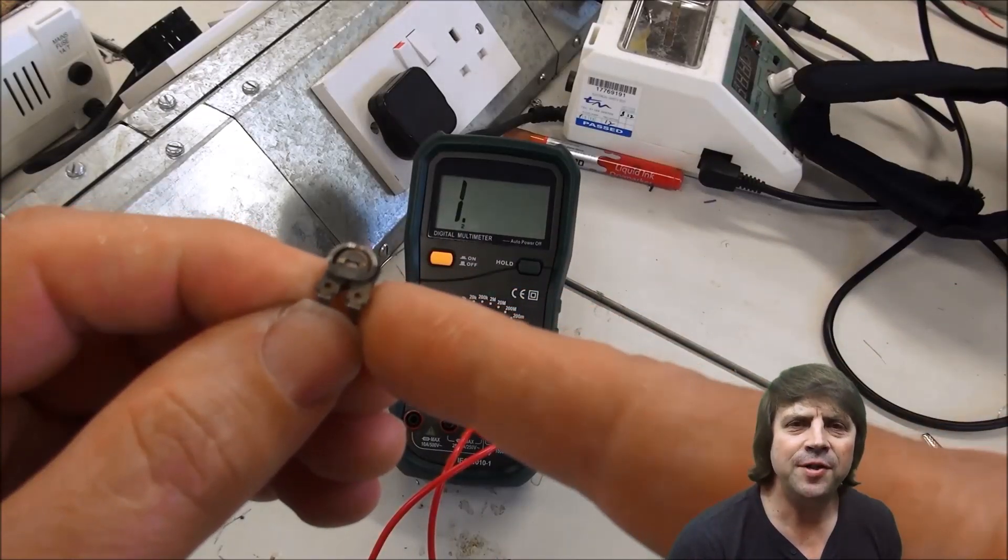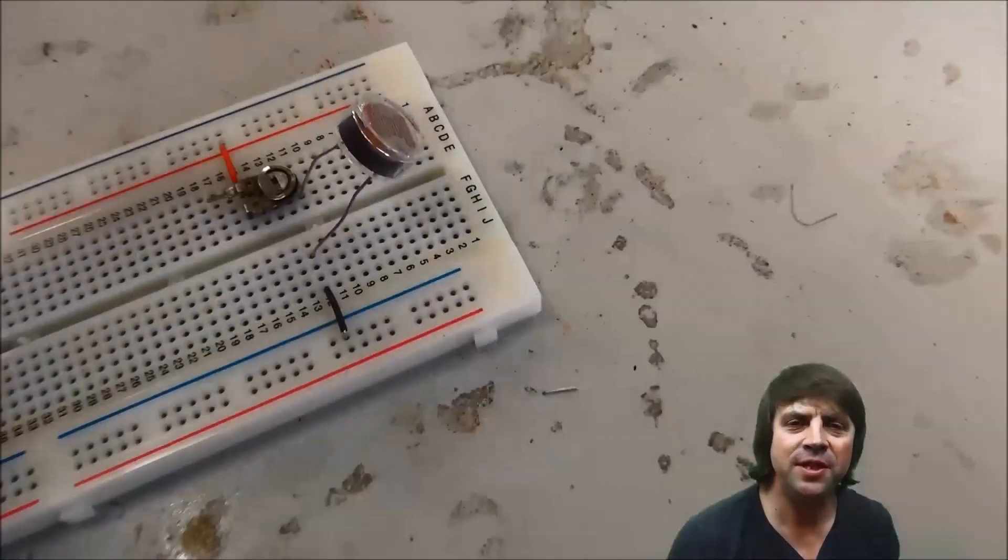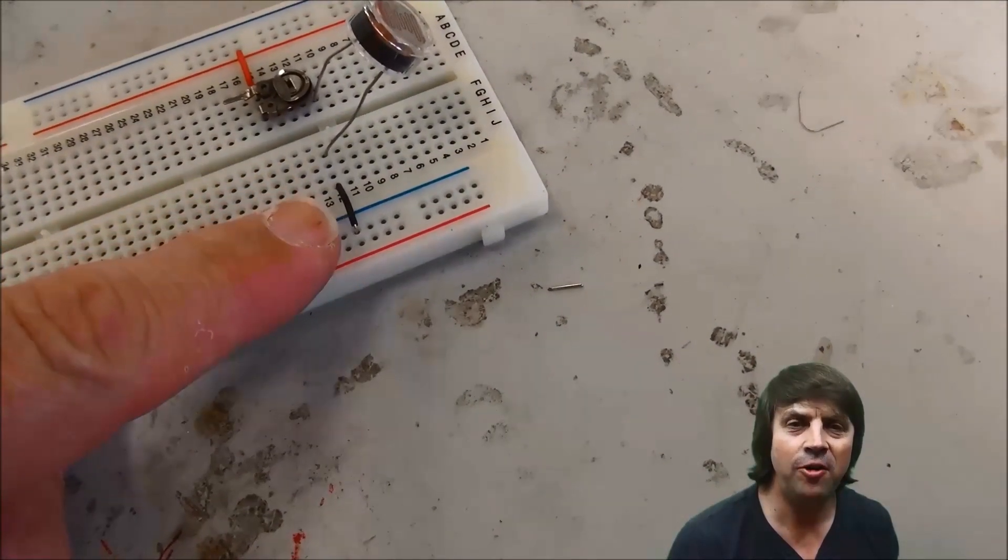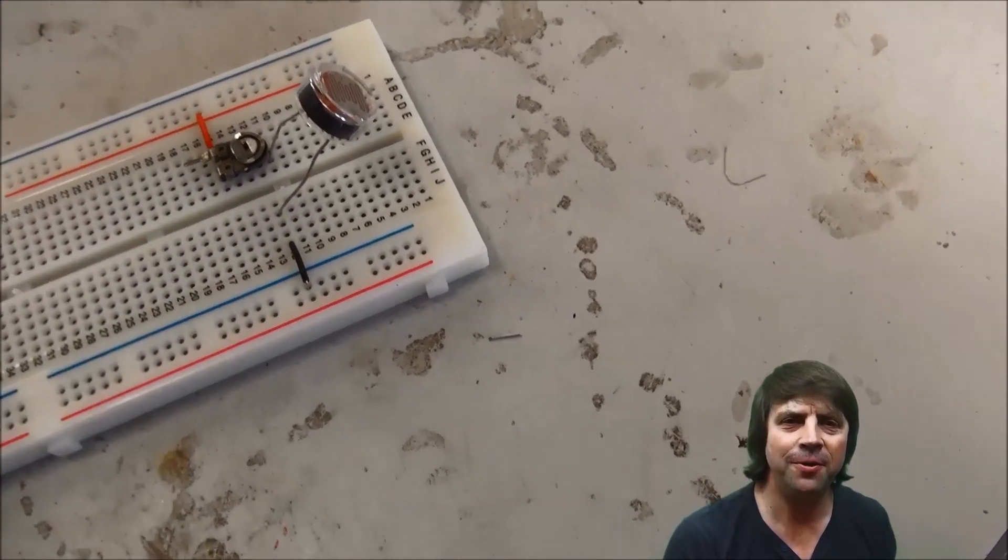In this part of the circuit I've connected the LDR to a 470kohm resistor. It's a variable resistor and this allows me to tune the LDR and the voltage across the LDR.